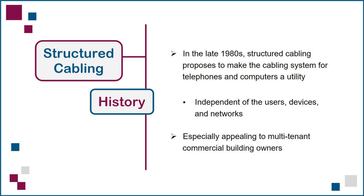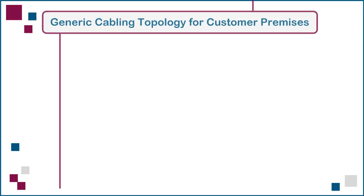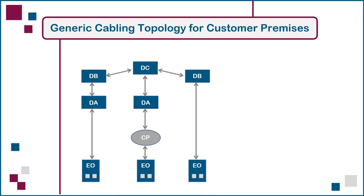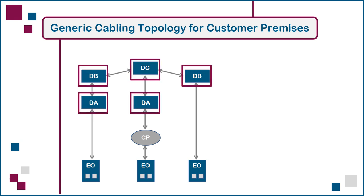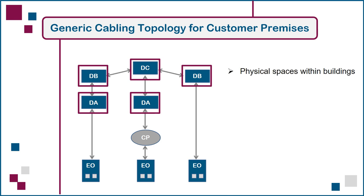That's it for the history lesson. Let's now jump to the present with a look at the current generic cabling topology for customer premises. Here's the generic cabling model, as defined in TIA and global cabling standards. What we have here is a hierarchical star topology, consisting of connection points linked together with cables. The rectangular boxes labeled DC, DB, and DA are physical spaces within buildings, such as enclosed rooms.